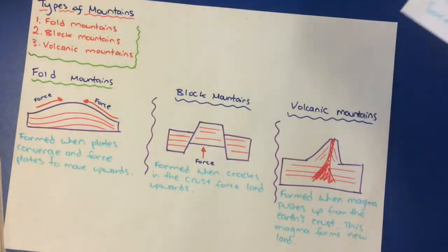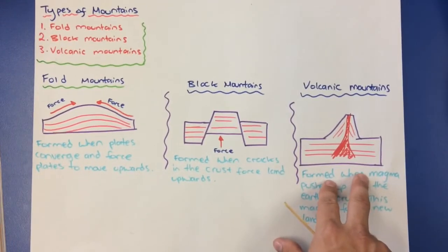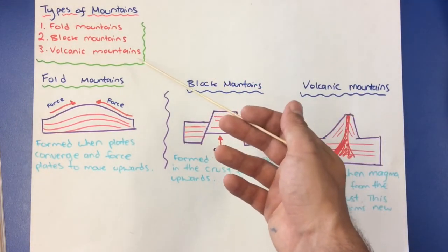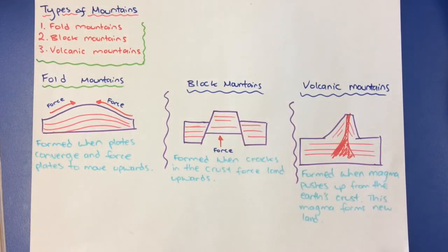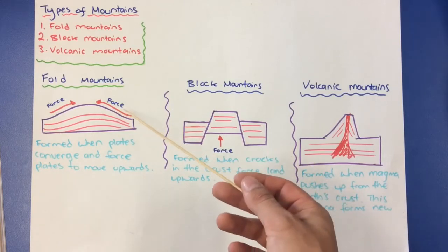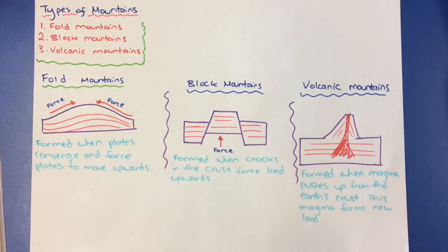Let's talk about different types of mountains. There are three different types I want to talk about today: fold mountains, block mountains, and volcanic mountains. Fold mountains are formed when plates converge and force the rock to move upwards — converging means push together. You can see that the red represents the force pushing the plates together and creating a fold mountain.